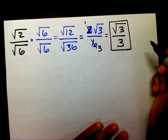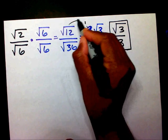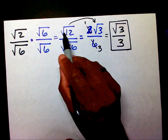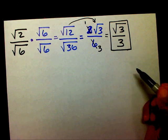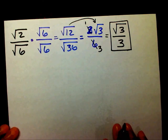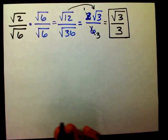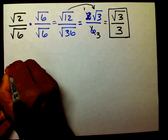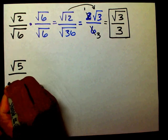There's your final answer. And again, if you don't know how I went from this step to this step, please watch the video on simplifying radicals. Let's do another one. Let's try radical 5 divided by radical 8.